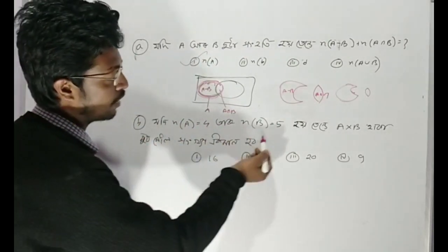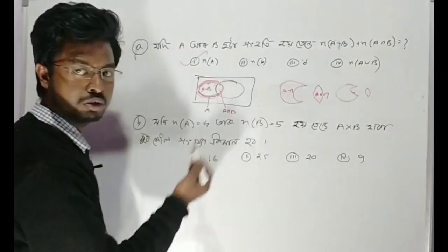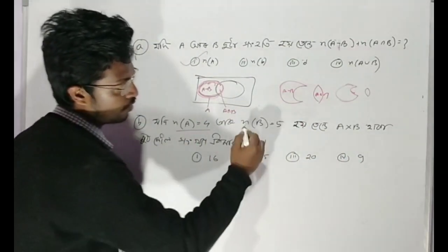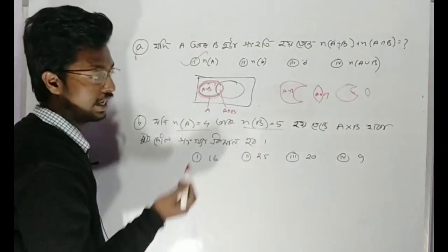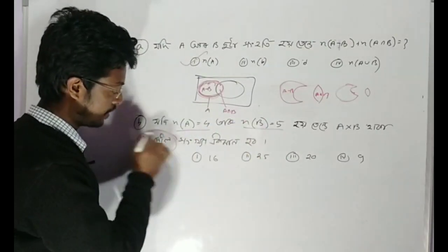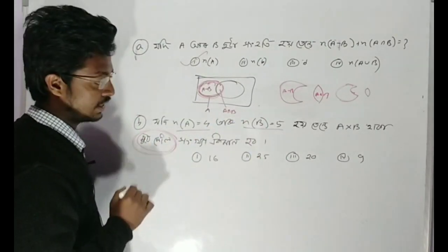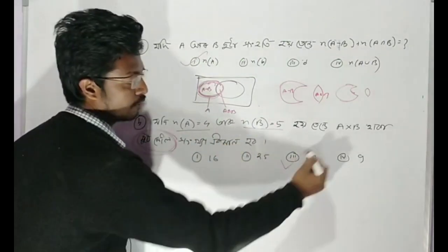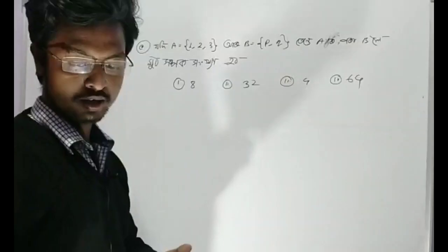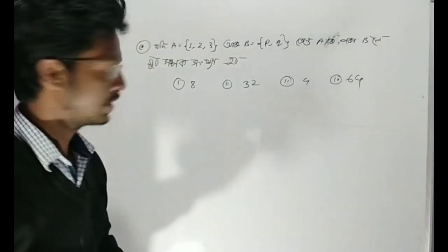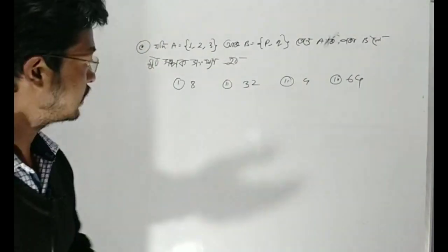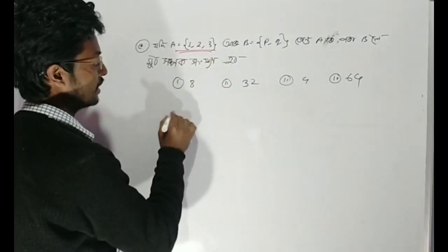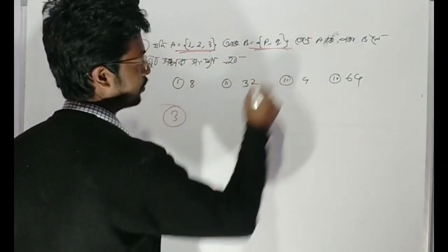Second question: n of A equals 4, n of B equals 5. That is A cross B. A×B. Consider size — let us do this. Next question based on this: the number means this, so the question is that A is 1 to 3, meaning A is 3.